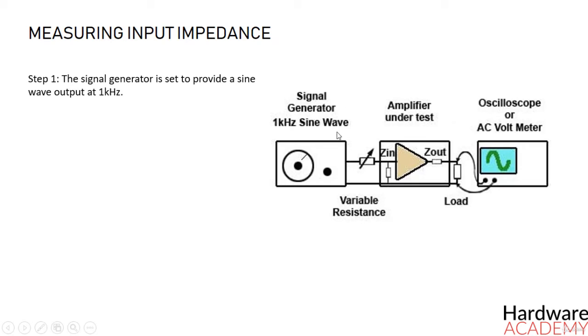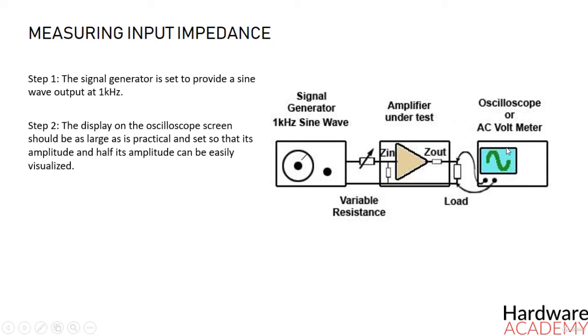The amplitude of the input signal should be adjusted so that the display on the oscilloscope is noise-free and distortion-free. The display on the oscilloscope screen should be as large as practical and set so that its amplitude and half its amplitude can be easily estimated.